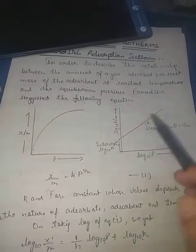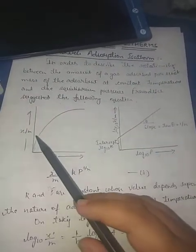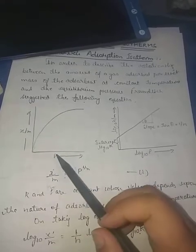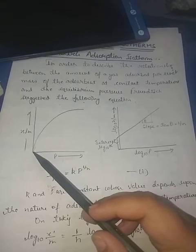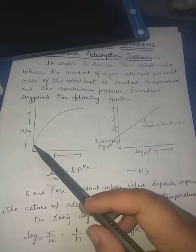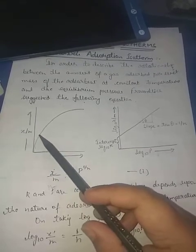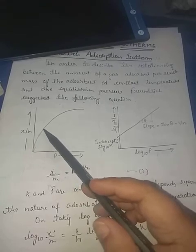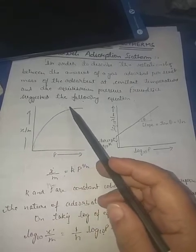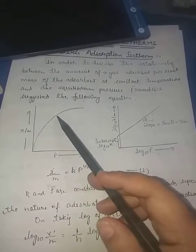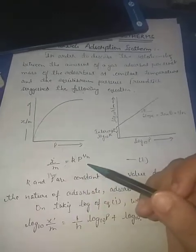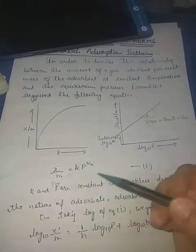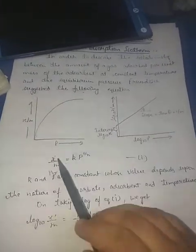There was a graph between X/M and pressure. We can easily see that at lower pressure the graph is a straight line, but it shows a slight curve at higher pressure. That's why this isotherm was not universally accepted — this was a demerit of the Freundlich adsorption isotherm.